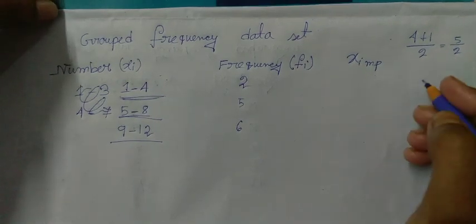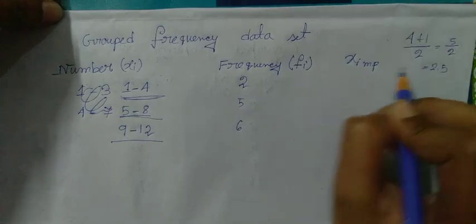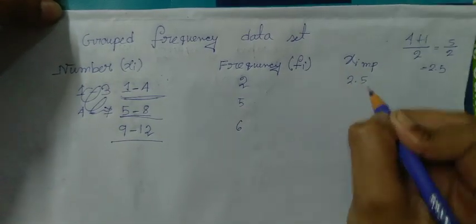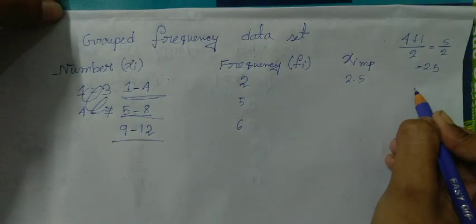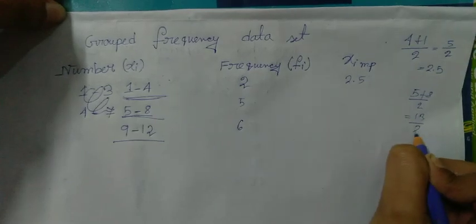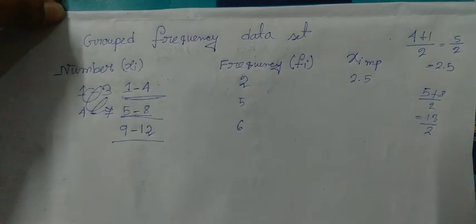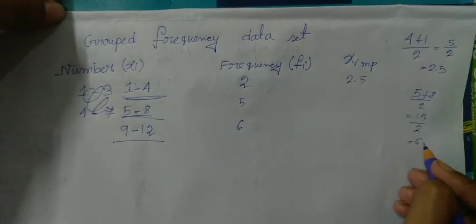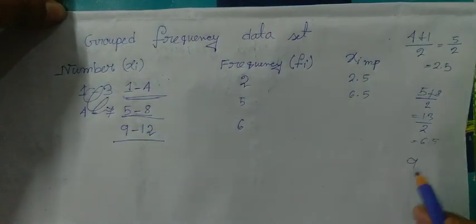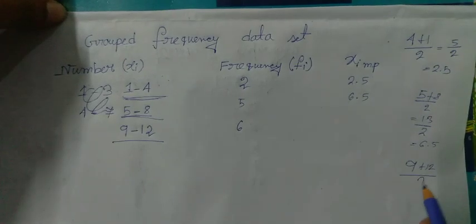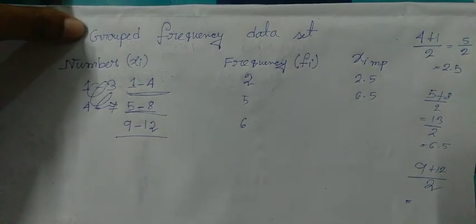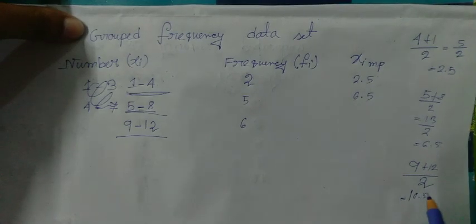5 by 2, 2.5, so midpoint is 2.5. 5 to 8, 5 plus 8 by 2, 6.5, 6.5. 9 plus 12 by 2, 6.5. 9 plus 12 by 2, 10.5.